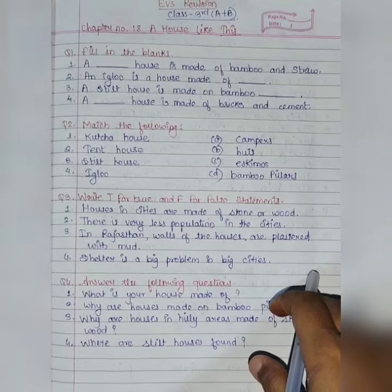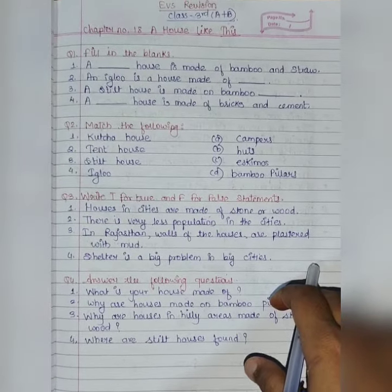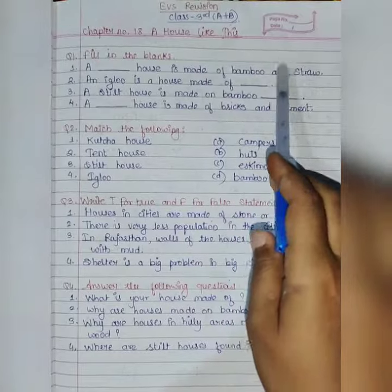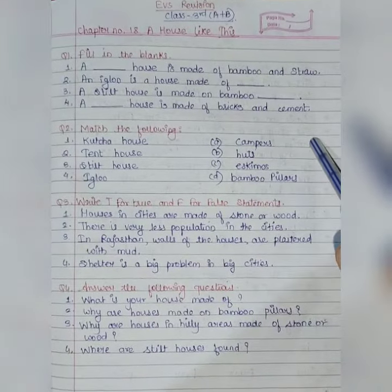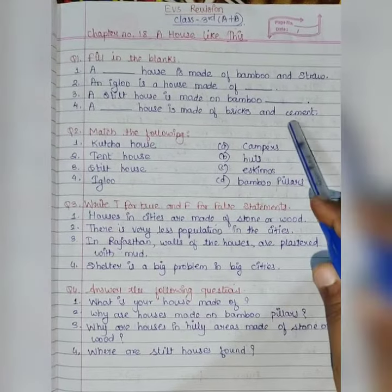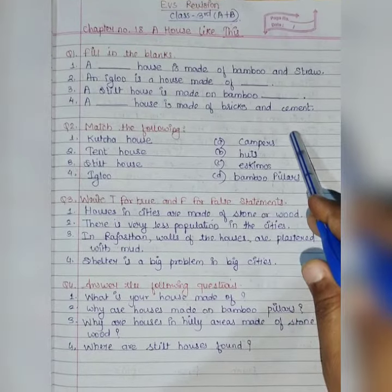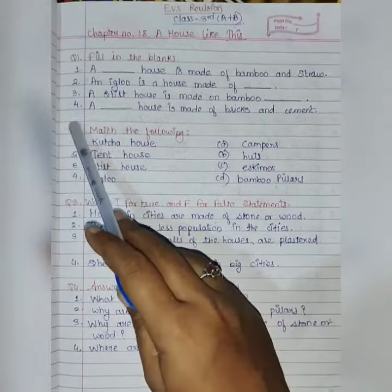Students, good morning. Today we do the EVS revision of chapter number 18, A House Like This. You have to give in some revision question answers from this chapter, so we discuss this question answers first.